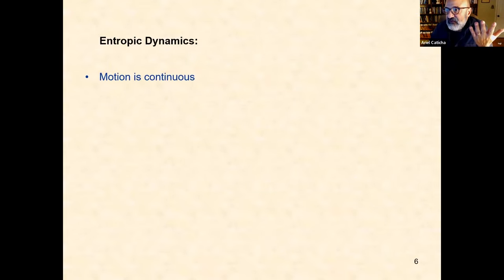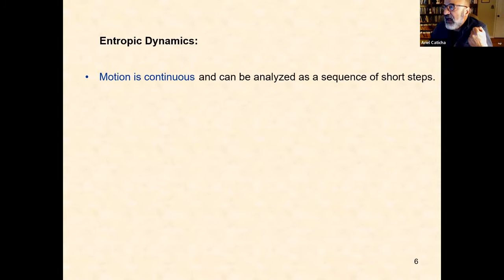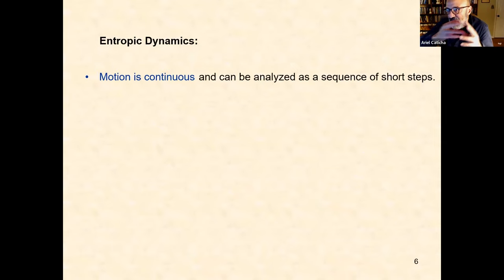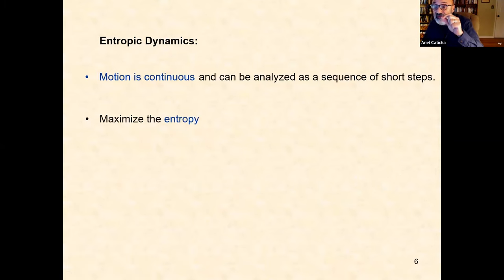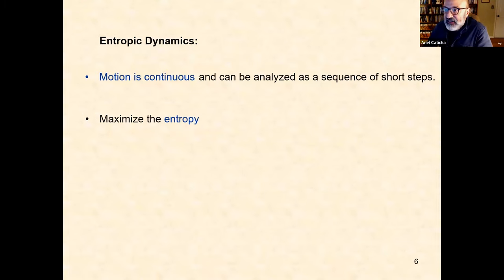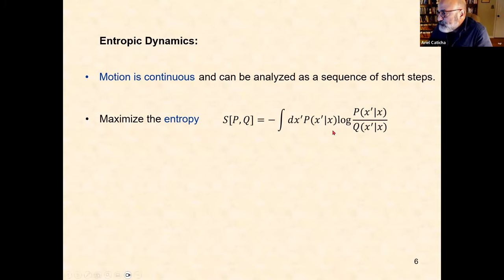Here is the generic form of entropic dynamics. We assume that motion is continuous — the motion of particles is continuous — and therefore it can be analyzed in a sequence of short steps. We're going to figure out the transition probability from one position to a neighboring one by maximizing an entropy. Here you see a relative entropy of a potential posterior — the probability of transition from X to X prime — relative to a prior distribution.